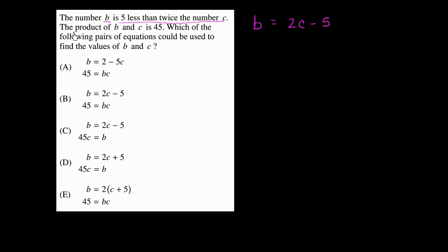The product of b and c is 45. So I could write that as b times c is equal to 45. Which of the following pairs of equations could be used to find the values of b and c?